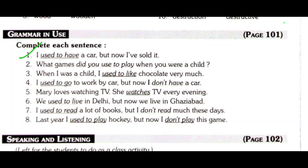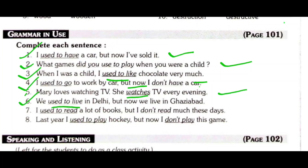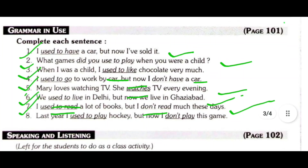Grammar — 'used to': I used to have a car but now I have sold it. What games did you use to play when you were a child? When I was a child I used to like chocolate very much. I used to go to work by car but now I don't have a car. My love's watching TV — she watches TV every evening. We used to live in Delhi but now we live in Gazdavad. I used to read a lot of books but I don't read much these days.